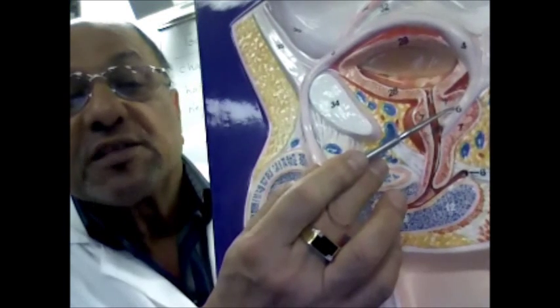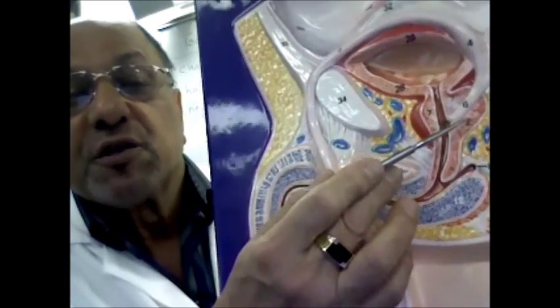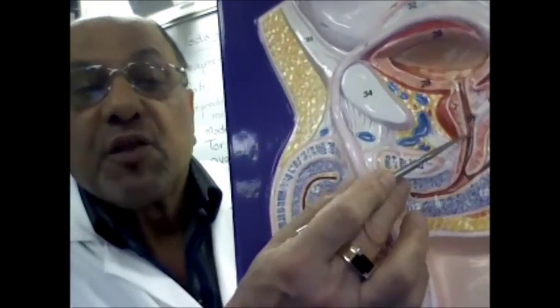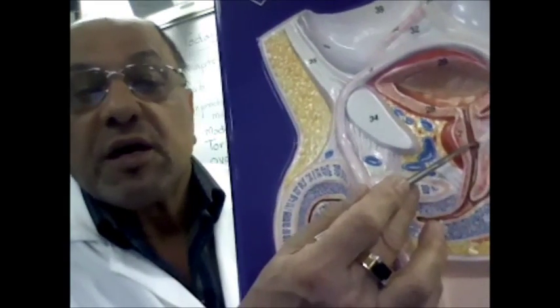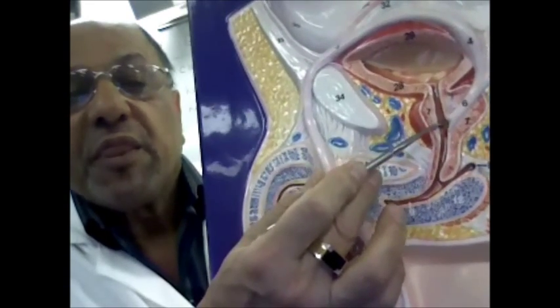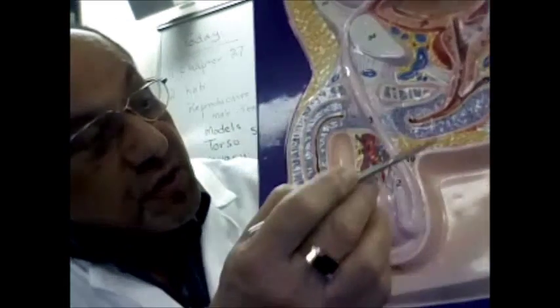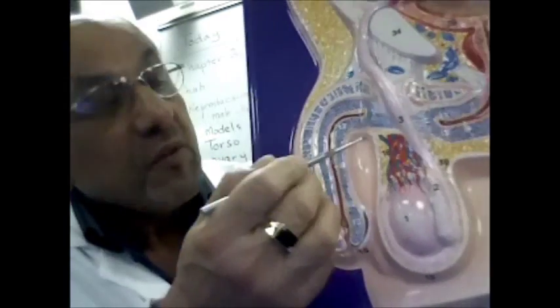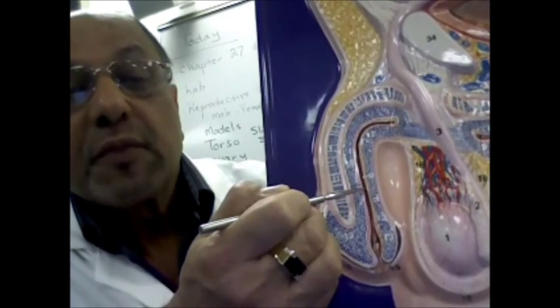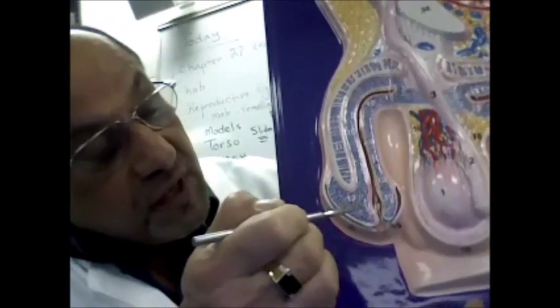The ejaculatory duct will connect to the urethra. There are three parts to the urethra in the male. This first part here is known as the prostatic urethra, then we have the membranous urethra, and then the urethra will extend through the penis and that is known as the spongy urethra or also known as the penile urethra.